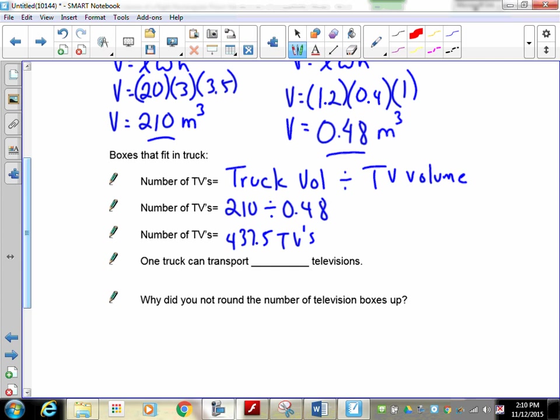So how many can the truck transport? This is where we come into a difference between a mathematical answer and a common sense answer. Your common sense answer goes in your statement, but your mathematical answer goes in your calculation. You can only fit 437 whole TV boxes in there. You cannot put 0.5 of a TV in; otherwise, the door won't close. You can't round it up because it won't fit in. So you have to round down to 437 televisions.